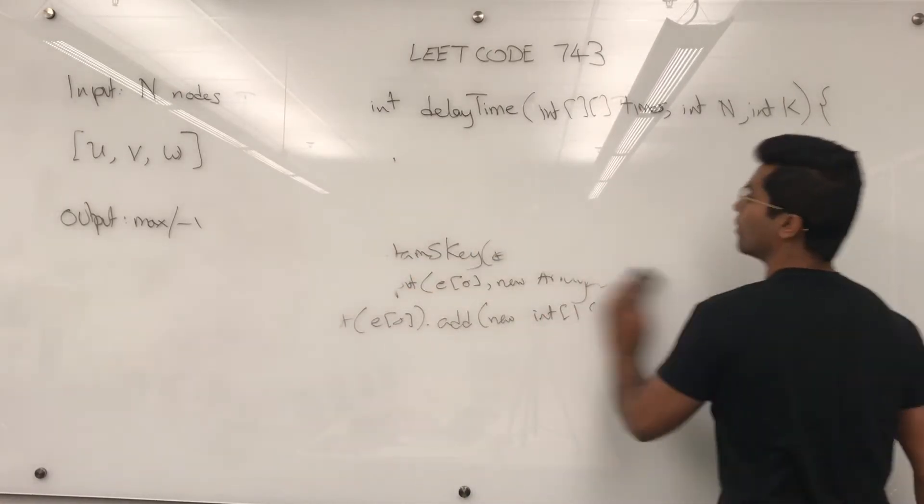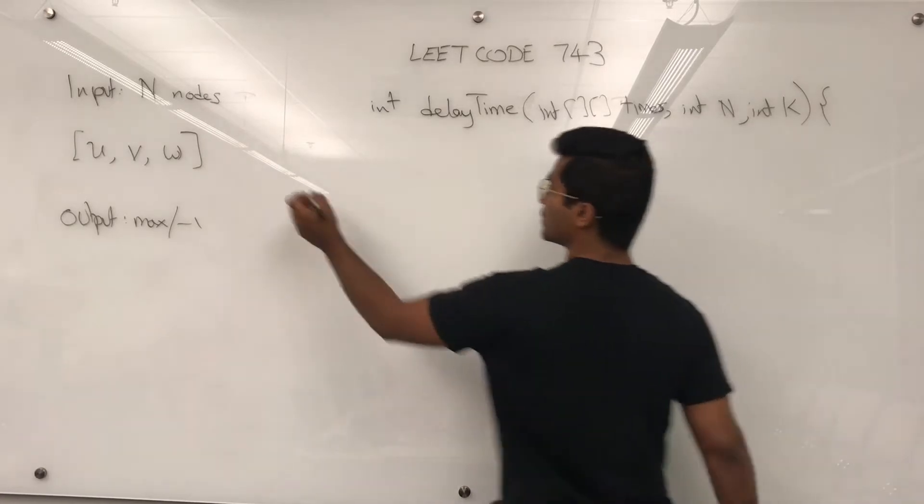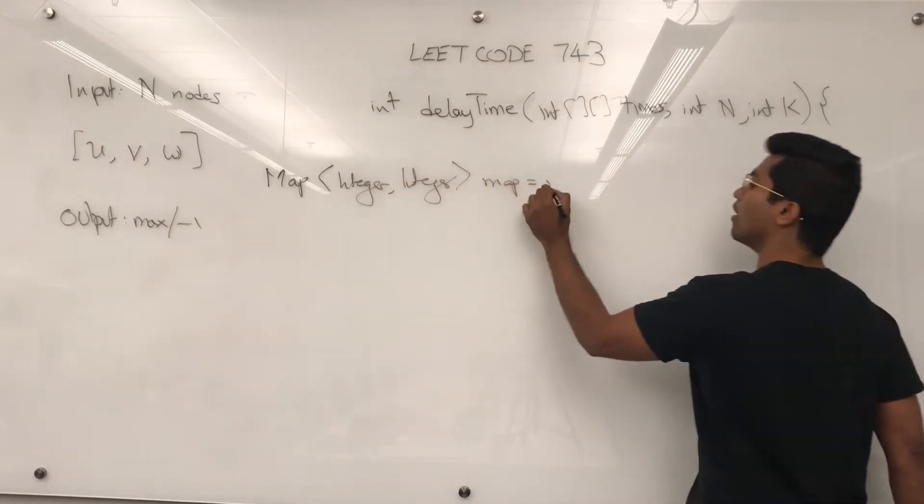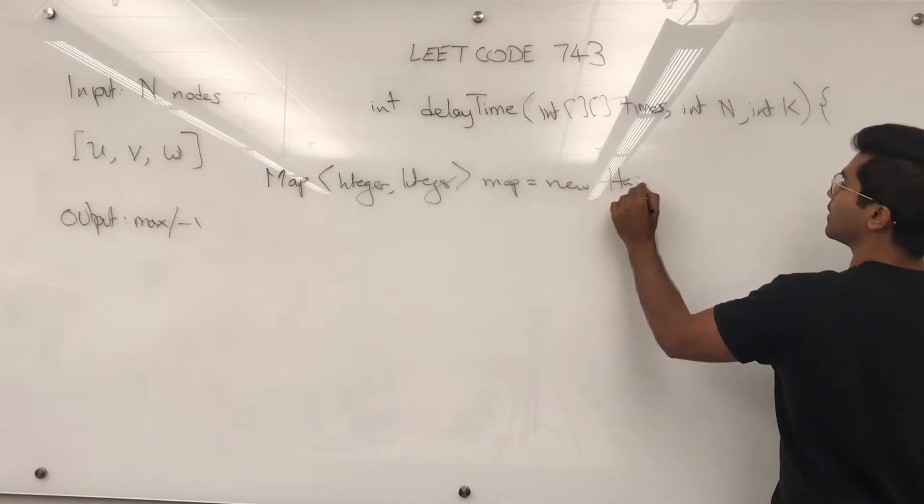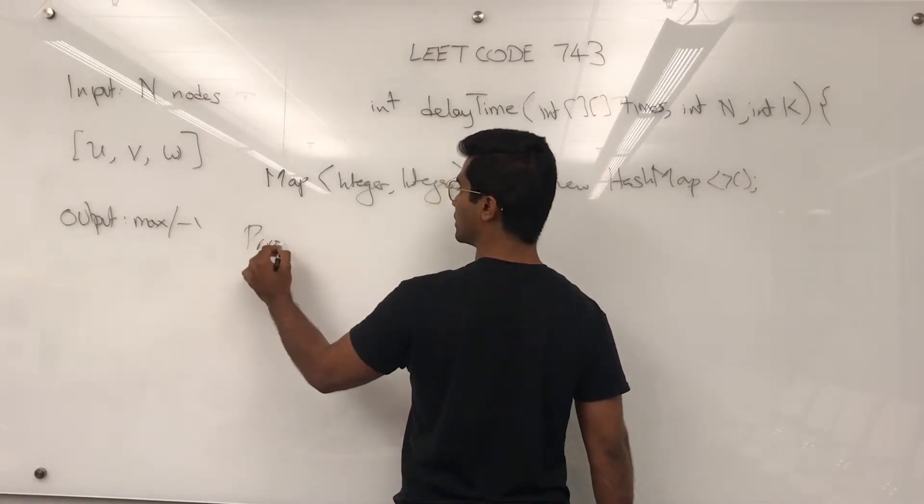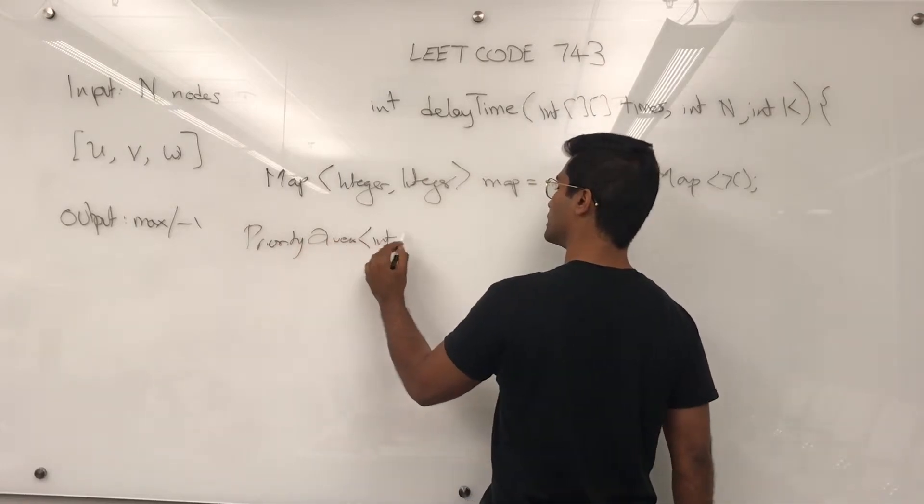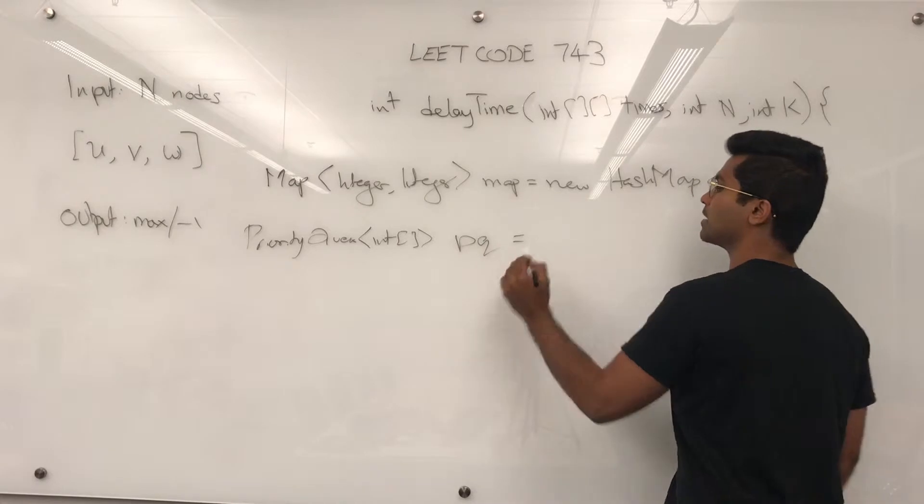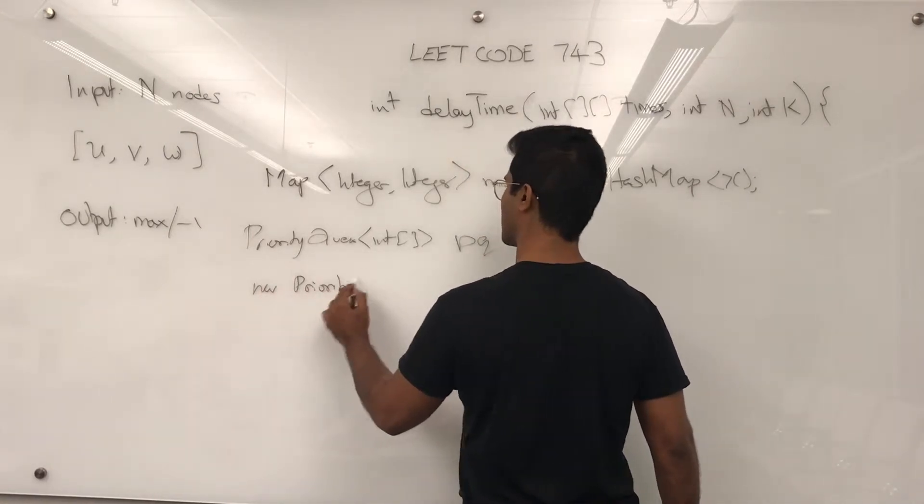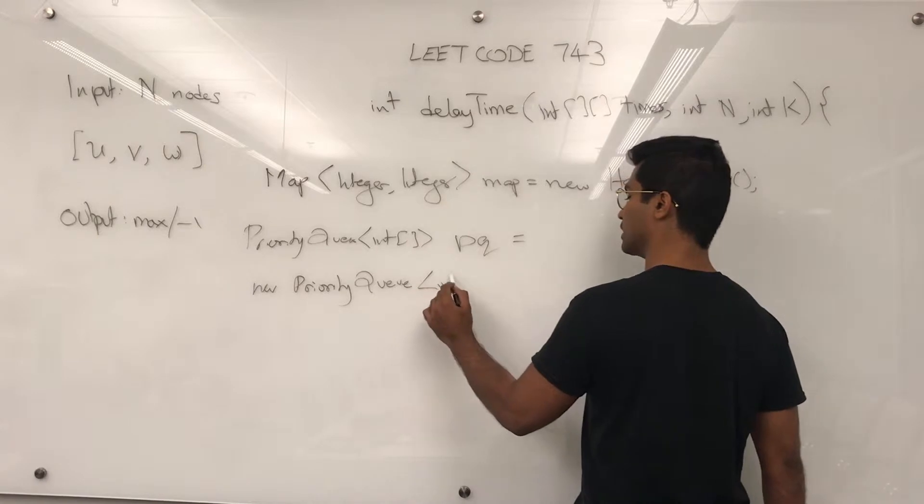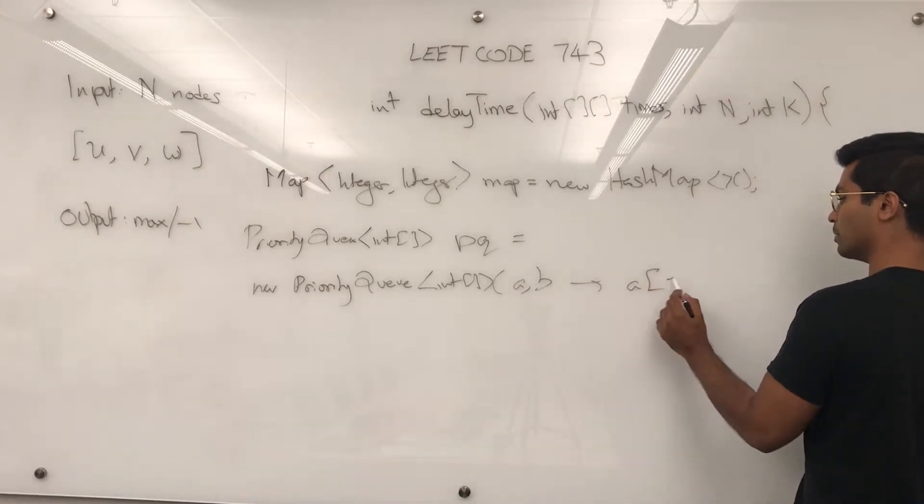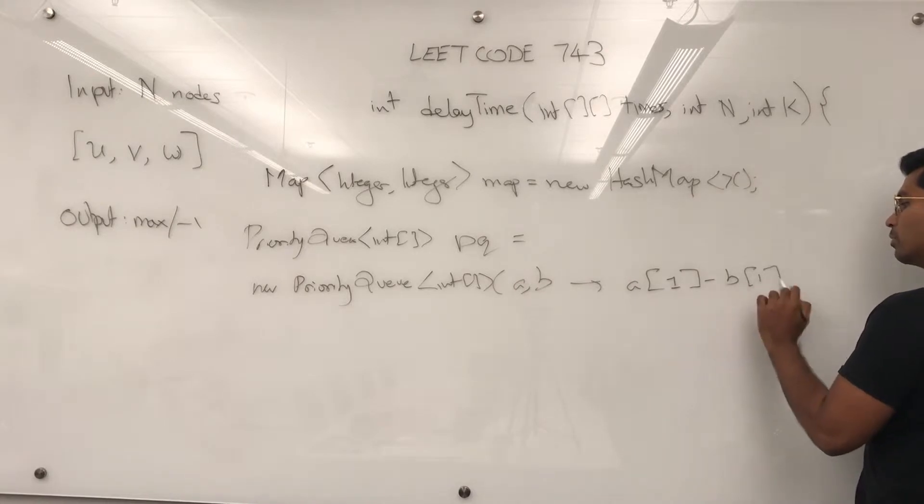Now we have to have two other data structures. What we have to do is a map of integer comma integer, which is going to keep track of the distance between the node K to every other node. And the other one is we have to have a priority queue of type integer array. And this is how we're going to make use of the Dijkstra's shortest greedy trick. New priority queue. And I'm going to use a lambda expression here. Let's say A of 1 minus B of 1. This is going to be in ascending order.